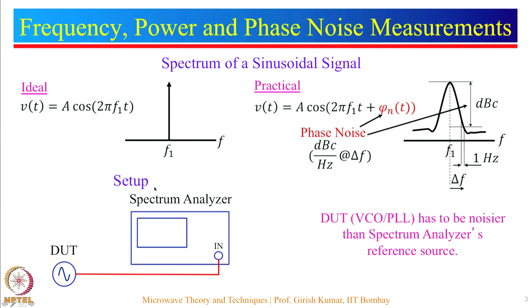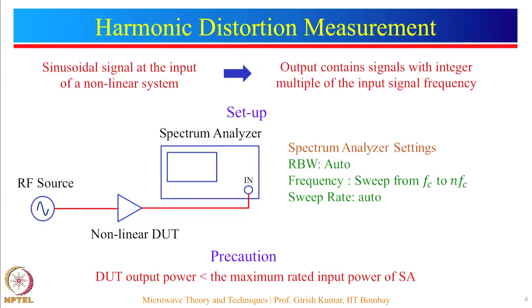Power and frequency measurements are straightforward. For harmonic distortion measurement, you have an RF excitation source for a non-linear DUT and the output is connected to the input of the spectrum analyzer. You must ensure that the output of the DUT, such as an amplifier, does not damage the spectrum analyzer circuitry. If needed, put an attenuator between the DUT output and the spectrum analyzer input as a precaution.